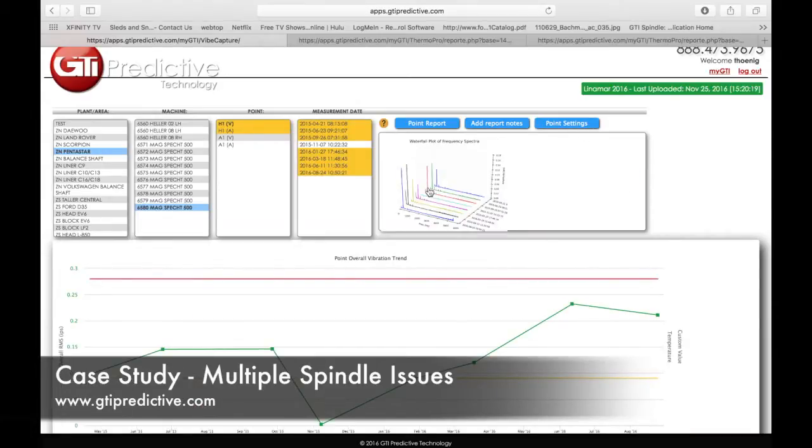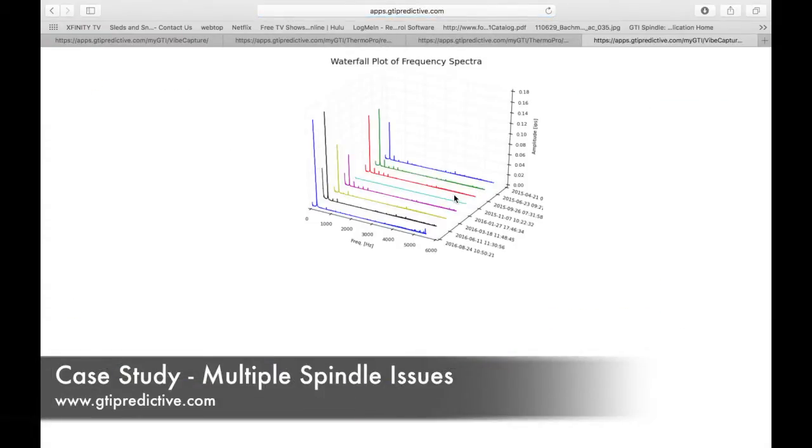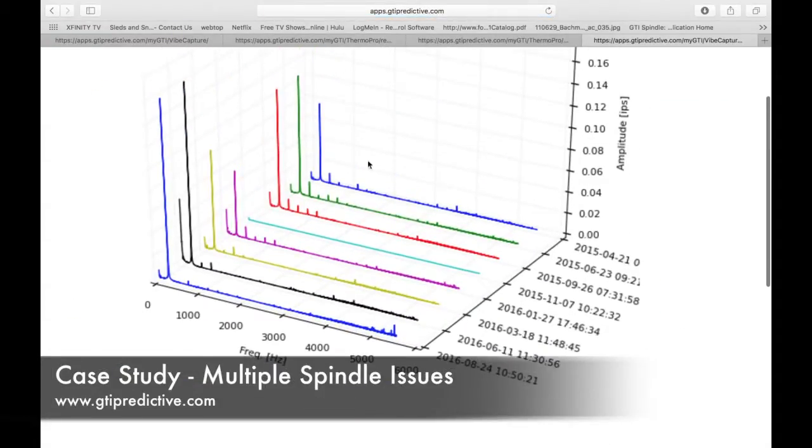Again, we're visited with a similar waterfall plot here that's showing us we're having a tooling imbalance problem that's coming and going, coming and going. I even see a false reading here. I can see that somebody took a blank reading which should probably be erased, but it's not troublesome at this point.